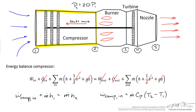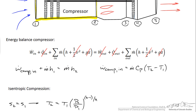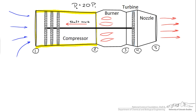Because this is an ideal isentropic compressor — adiabatic and reversible — we use the isentropic relation for an ideal gas: T2 equals T1 multiplied by the pressure ratio raised to the factor (K-1)/K. Plugging in the ambient temperature of 300 K, pressure ratio of 20, and K = 1.4, the temperature at the compressor exit is a little over 700 K — well before the flames.